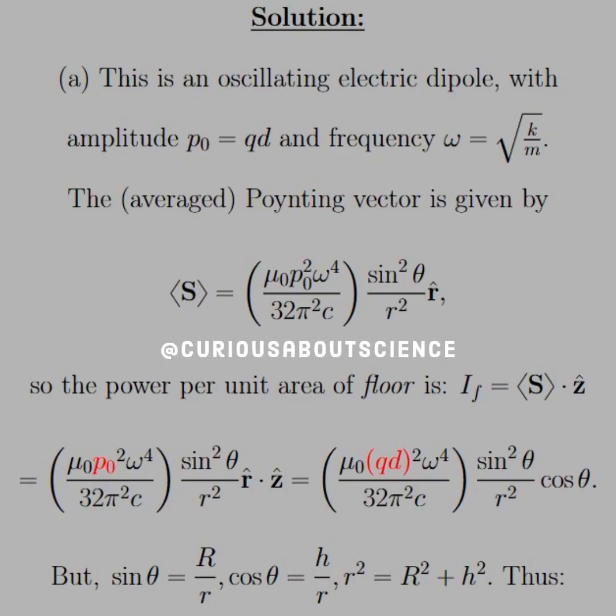Part A: We know this is an oscillating electric dipole with amplitude P naught equal Q times D, and the frequency is square root of K over M. The average Poynting vector is given by mu naught P naught squared omega to the 4th over 32 pi squared C times sine squared theta R over R squared in the R hat direction.